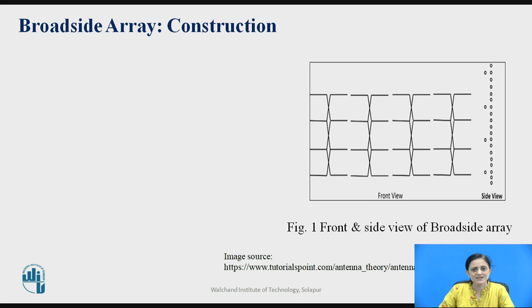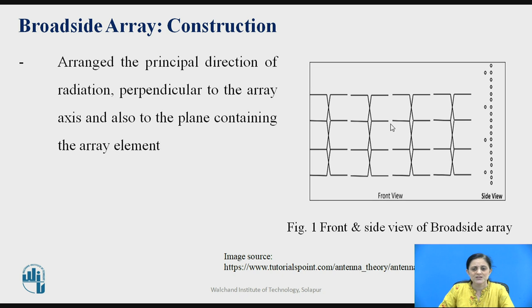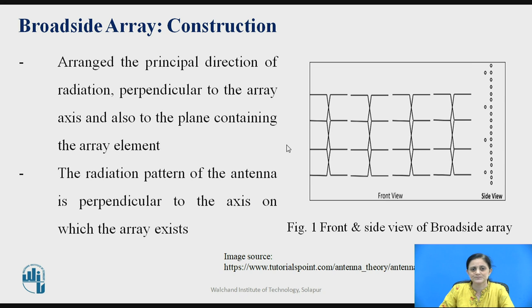The broadside array construction is shown in this figure. The number of elements are connected to each other; the principal direction of radiation should be perpendicular to the antenna array axis and also perpendicular to the plane containing the array elements. This shows the front view of the broadside array antenna and the side view showing the points connected linearly. The radiation pattern of the antenna is perpendicular to the axis on which the array exists.